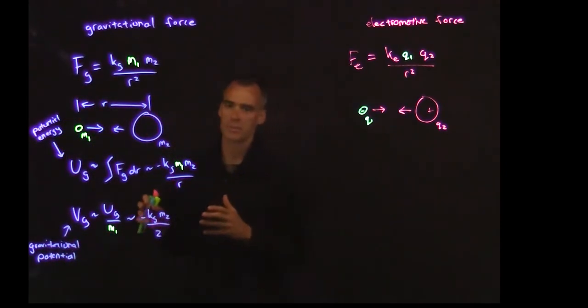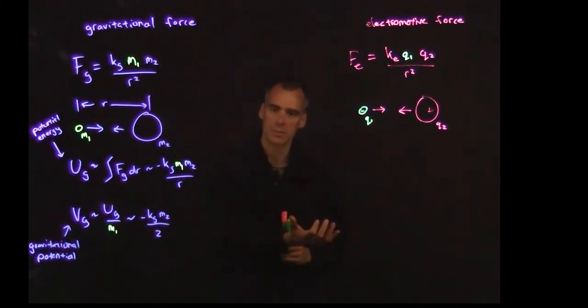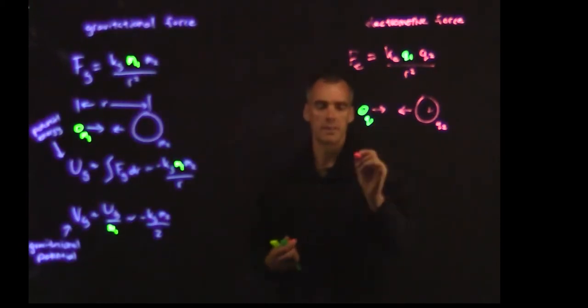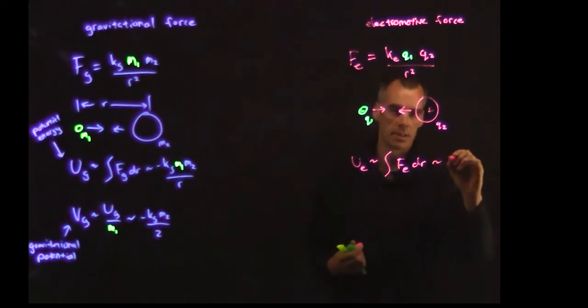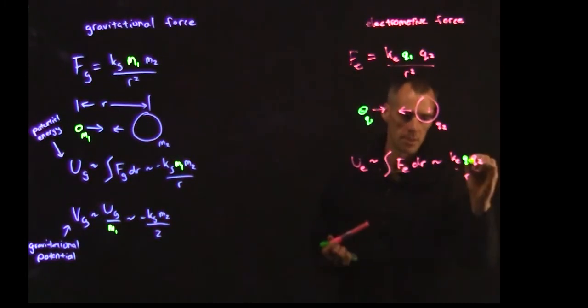And the reason I bring this up is because there's something very similar with the electromotive force. And this gravitational potential actually corresponds to what we'll see as an electric potential, which is what we call the voltage or v. So similarly, if we integrate this, we get this electric potential energy function.